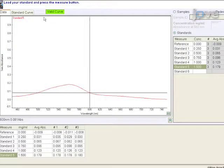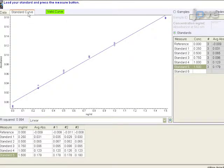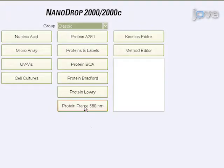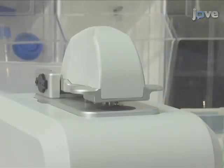Unlike the Protein A280 method, the Protein BCA method requires that a standard curve be generated before sample protein concentrations can be measured. To generate a standard curve, start by selecting the Protein BCA method from the main menu. If the Wavelength Verification window appears, ensure the arm is down.